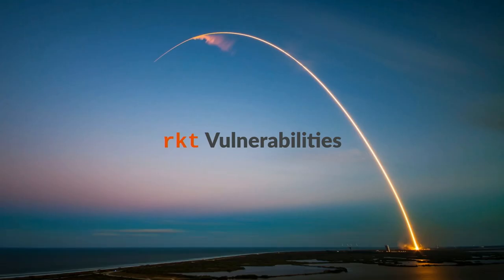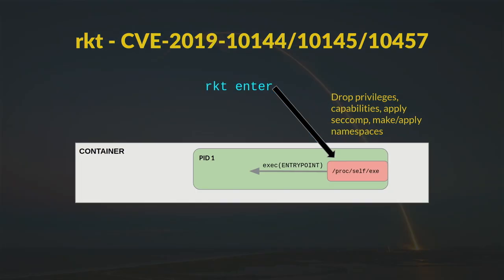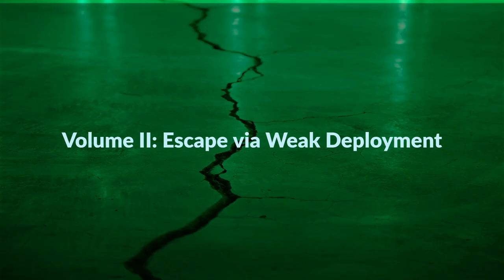We're also going to chat about Rocket for a second. This set of Rocket vulnerabilities is similar to the runc escape in that it involves executing into a container. The difference is that Rocket doesn't actually drop anything — there's no seccomp, all the capabilities are still in place, and cgroups aren't applied. Because Rocket enter requires you to run as root, not dropping anything is super bad. Rocket is basically abandoned ware at this point, with Red Hat favoring Podman. Happy hunting if you do actually find someone who runs Rocket. That summarizes the section on bugs in container engines themselves.